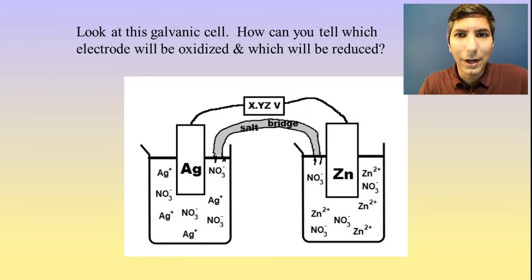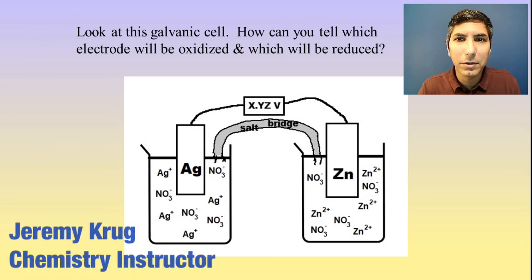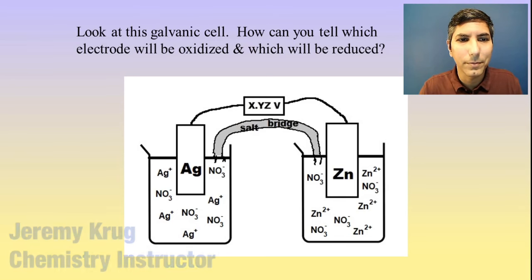Hi there, I'm Jeremy Krug, and in this video we're going to take a look at the second part of Unit 9, Section 7, which is about galvanic cells and the calculations involved with those.